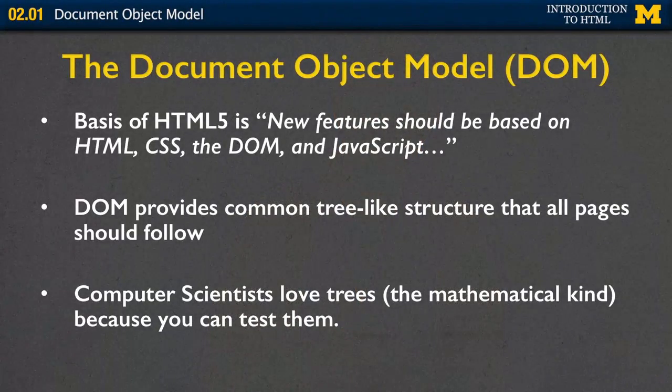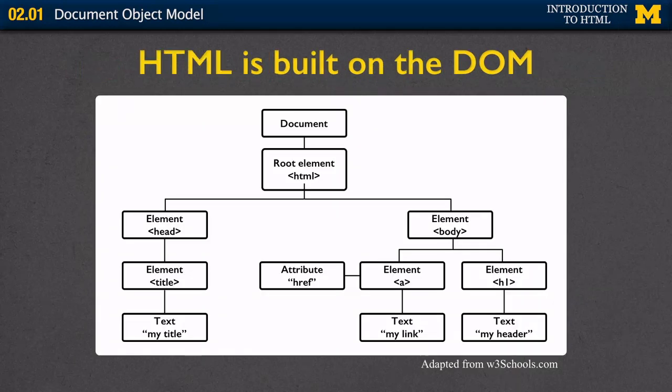One of the things about geeky computer scientists like myself is that we love trees — not like trees outside that are green and beautiful in the fall. We like mathematical trees, these tree-like structures that we can prove to be valid or invalid. So when we talk about HTML as a tree, we're talking about this idea that at the very root of the tree we are going to be creating HTML.